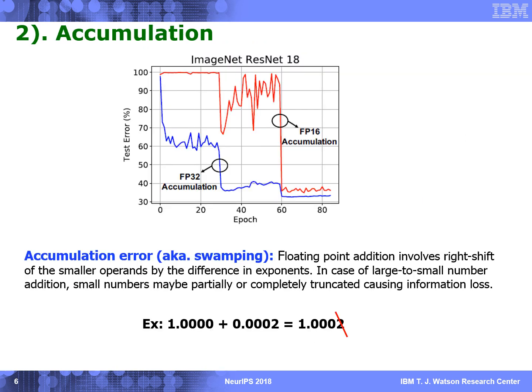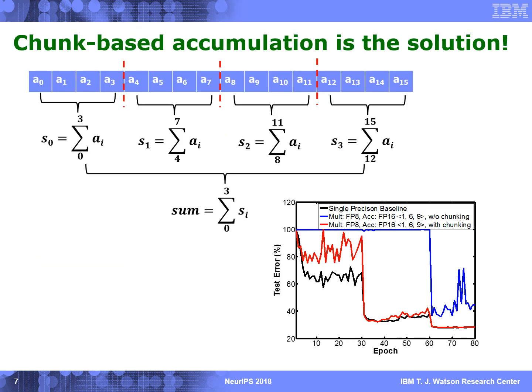The second challenge is the precision of partial sum accumulation in dot product. 16-bit accumulation doesn't work for large networks. We found that the degradation is caused by the accumulation error, also known as swamping error, which happens when a large number is added to a small number. To reduce the accumulation error, we introduced a technique called chunk-based accumulation. The idea is to divide the long dot product into small chunks. Accumulations are first performed within each chunk, followed by adding the intermediate results from all the chunks. By using a simple two-level chunk-based accumulation, accumulation-bit precision can be reduced down to 16-bit while preserving model accuracy.